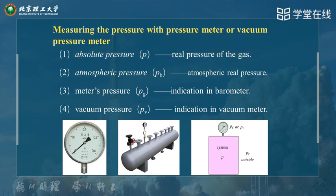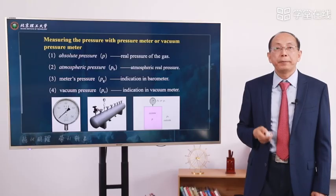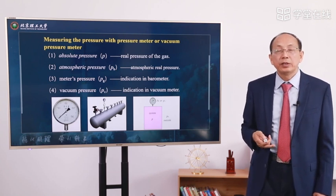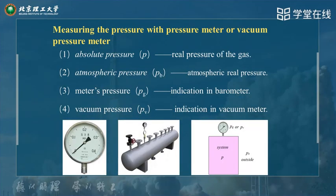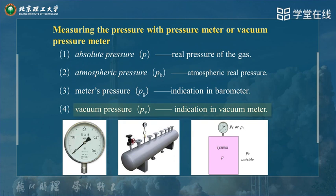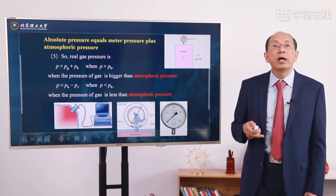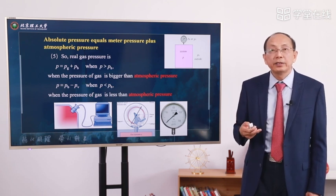However, outside the environment there is another pressure — we call it atmospheric pressure. When we test the pressure in the tank using a meter, we call it gauge pressure, PG — it is the indication of the barometer. The fourth one is vacuum pressure. When the pressure in the tank is lower than atmospheric pressure, we call that pressure vacuum pressure. In the case of a vacuum meter, how do we calculate the absolute pressure when we test the pressure by meter?